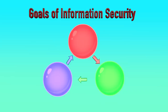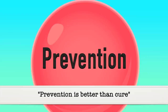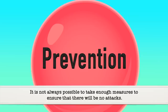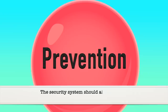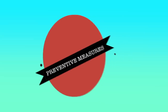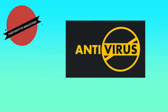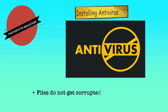Now let us discuss the goals of information security. The goals can be broadly divided into prevention, detection and recovery. As we all know, prevention is better than cure, but it is not always possible to ensure there will be no attacks. However, the security system should aim to ensure that a possible attack will fail. One example of preventive measures is protecting a computer system by setting up a password to prevent unauthorized access. Another example is installing antivirus software on every system so that files do not get corrupted by viruses spread through emails or pen drives.